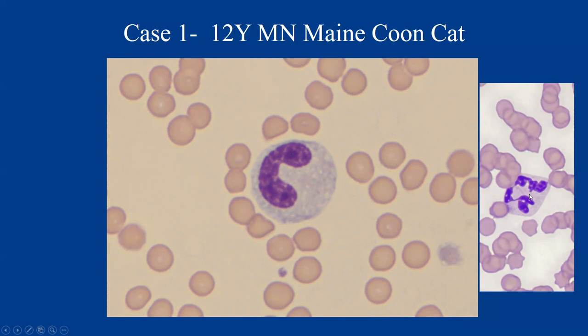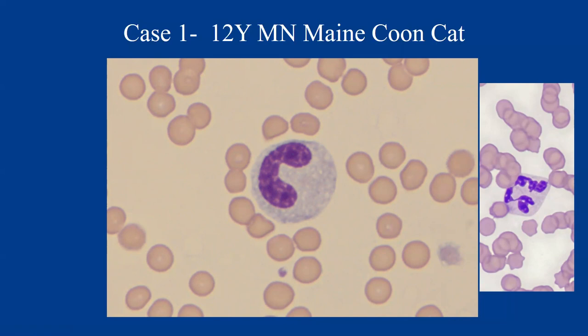Here is another white blood cell that looks different than the last one. It has cytoplasmic basophilia indicating toxicity, and also foaminess to the cytoplasm — another indicator of toxic change. The nucleus is pretty U-shaped or band-shaped. So this is a band cell. Band cells are a step before your segmented neutrophil in production. When we start to release bands into circulation, that is called a left shift. It means the bone marrow is trying to keep up with an inflammatory stimulus, and our normal mature neutrophils are being consumed, so the bone marrow releases immature precursors. Left shifts are usually associated with inflammatory conditions.